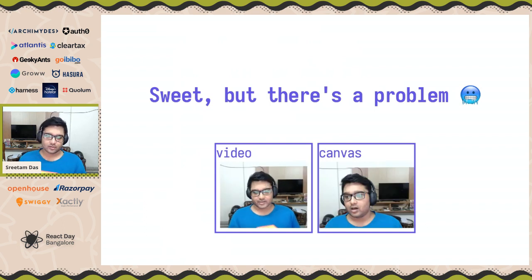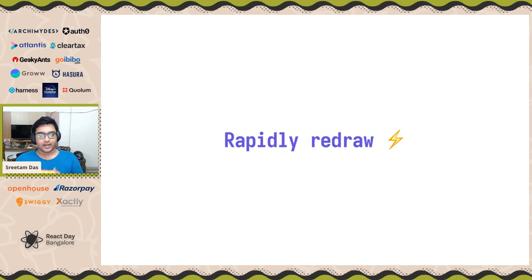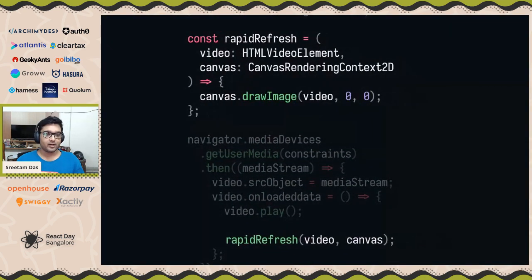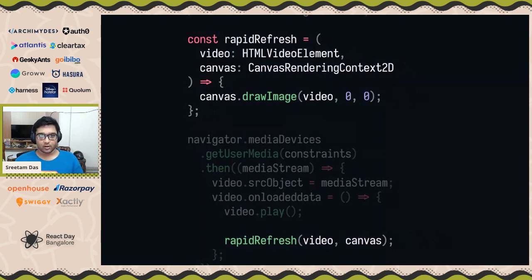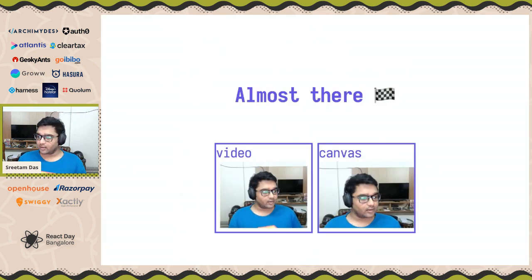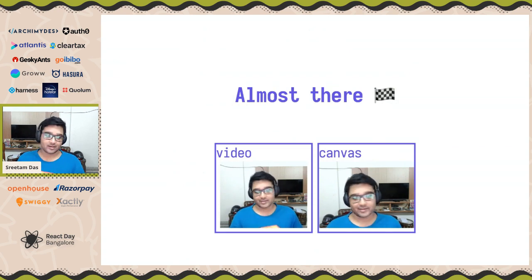This works, but the second image is actually stationary. Why does that happen? That's because we're only painting on the canvas once. What we need to do is draw on the canvas again and again, just as fast as possible. So we're going to define another function called `rapidRefresh`, and then do a big-brain move and call it again and again with `setInterval`. Now we're able to draw on top of our canvas continuously.